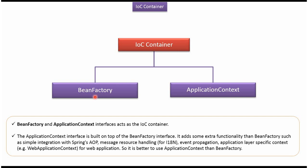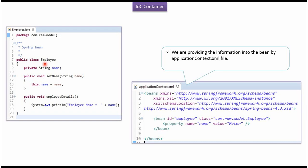Next, we will see examples of how to use BeanFactory and how to use ApplicationContext. Here I have defined an Employee class. It has a name property, a setter method for the name property, and an employee details method. This is the Spring configuration file, and here we have mentioned that the employee object should be created and the name property should be set as Peter.